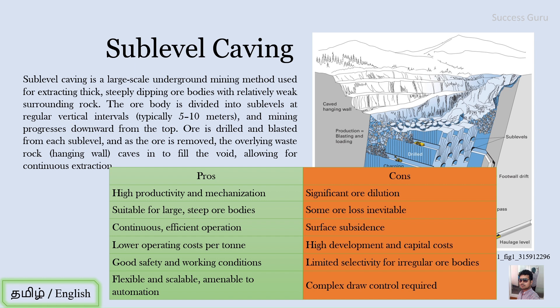Third, there will be surface subsidence. As you remove the ore body and the country rock falls in, subsidence on the surface is automatic. Fourth, there is a high development and capital cost because automation and mechanization always require significant investment.